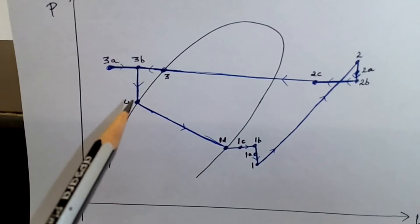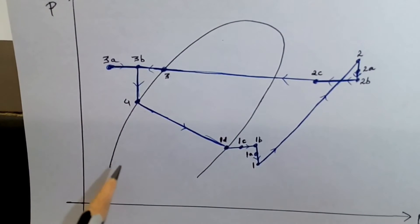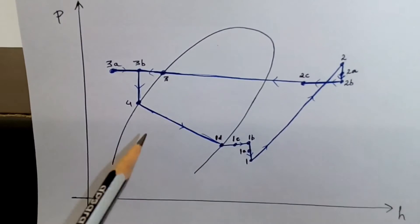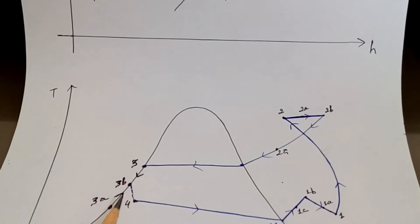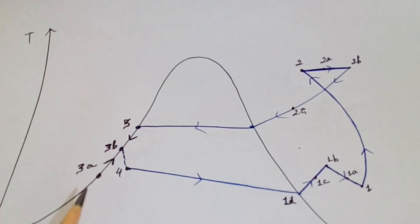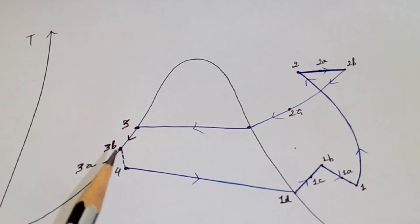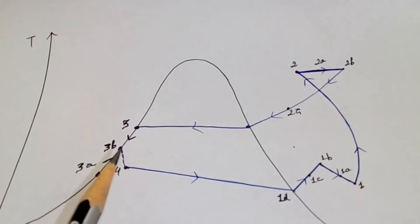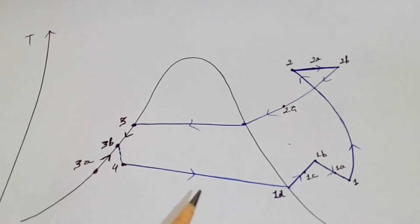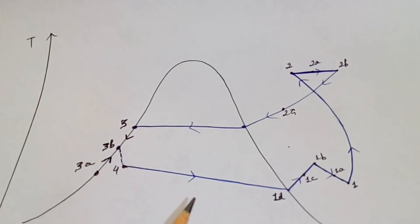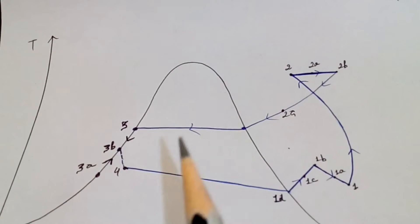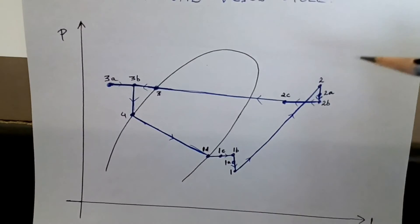From 4 to 1d there is heat absorption in the evaporator. The liquid refrigerant evaporates and heat is absorbed. This completes the actual vapor compression refrigeration cycle.